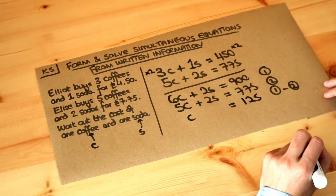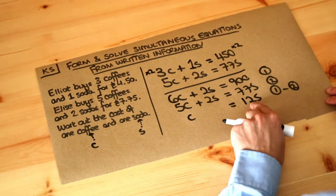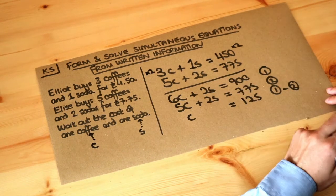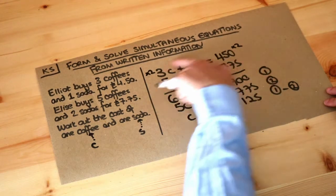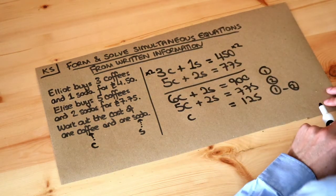We've worked out the cost of a coffee is 125 pence, or £1.25. Now we can substitute this back into one of the original equations to work out s.